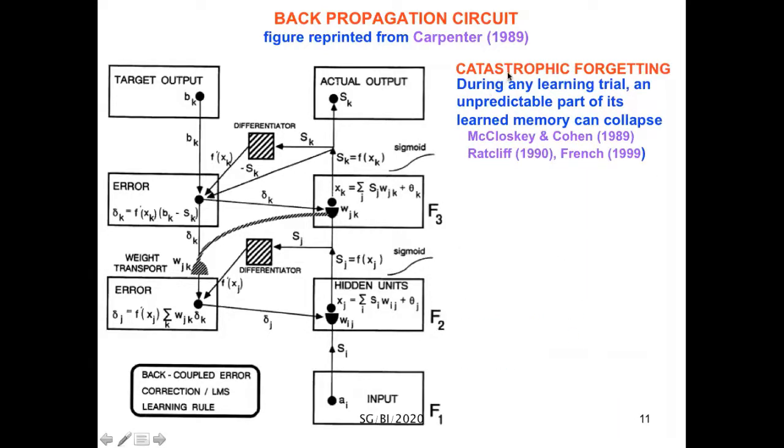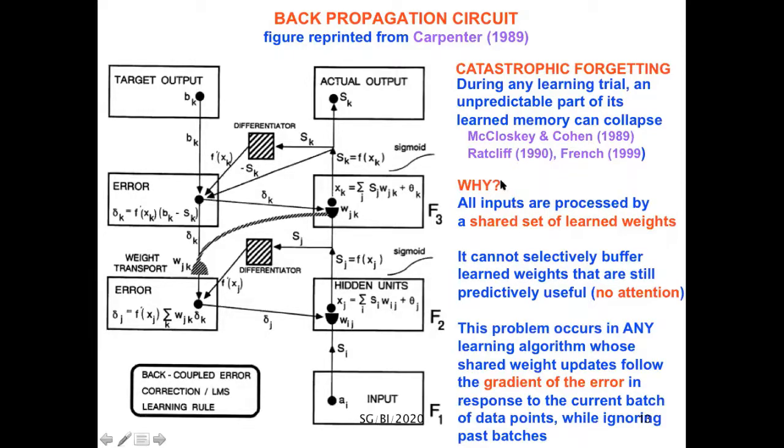Moreover, backpropagation and deep learning are susceptible to catastrophic forgetting. During any learning trial, an unpredictable part of its learned memory can suddenly collapse. Because of this, deep learning is neither reliable nor trustworthy. Why is this? All inputs are processed by a shared set of learned weights. The algorithm cannot selectively buffer learned weights that are still predictively useful. There's no attentional mechanism. This problem occurs in any learning algorithm whose shared weight updates follow the gradient of the error in response to the current batch of data points while ignoring past batches.